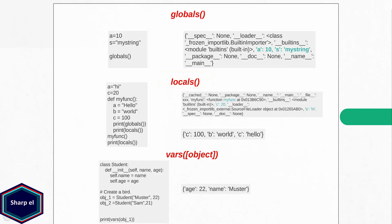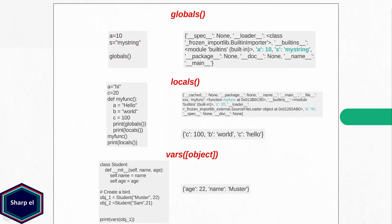Let's see an example. Here I defined two objects a and s of type integer and string in my main. Now I call the function globals in my main. As you can see, the built-in function globals returns all the user-defined as well as all hidden variables from the global namespace. The built-in function locals does the same thing as globals but returns all the variables from the local namespace as a dictionary.